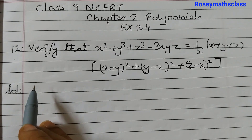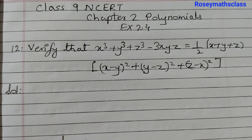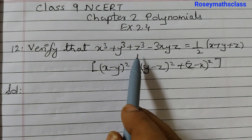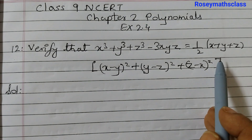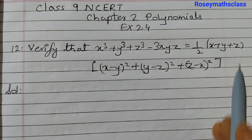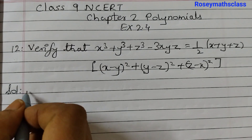We start from the right hand side. All we need to do is prove that the left hand side is equal to the right hand side. So we will start from the right hand side.